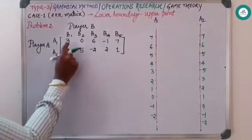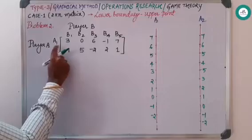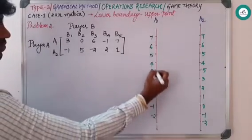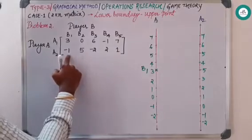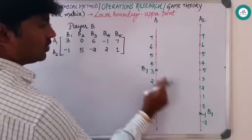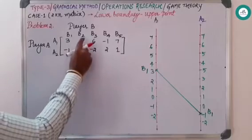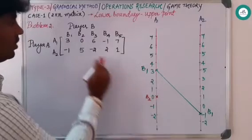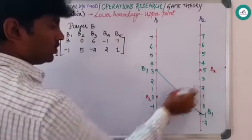Next, coming to this particular solution, Player B has three values for A1. Coming to A1, it has three value, so mark this here, call this as B1. And minus one in A2, go to A2, mark this and call this as B1. Join this with a straight line. Next, for B2 in A1 we have zero value. Mark this and call this as B2.